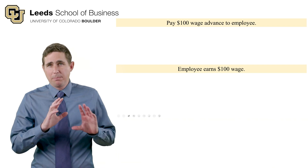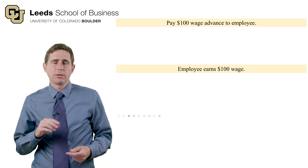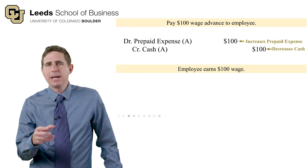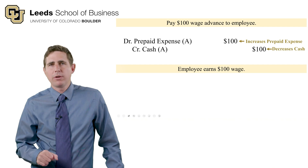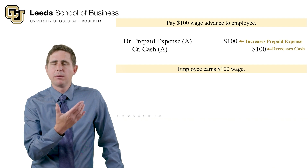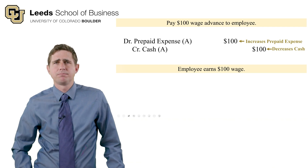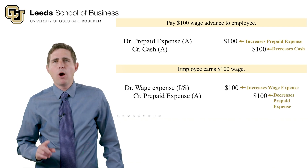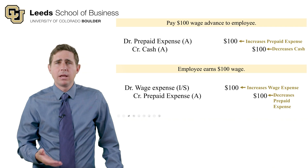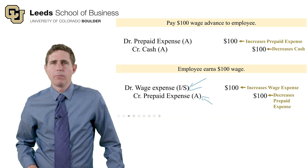Finally, we pay our employee and depreciate PP&E. First, we give the employee a $100 cash advance. Cash goes down with a credit of $100, and we set up a prepaid expense asset — the employee has promised to work for us — increased with a debit of $100. When the employee earns the wage, we reverse that asset: debit wage expense by $100 to increase it, and credit prepaid expense by $100 to reduce it to zero.